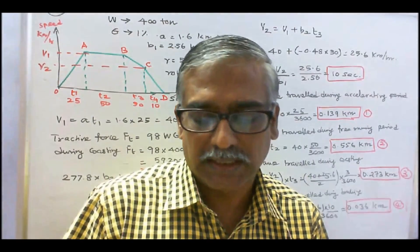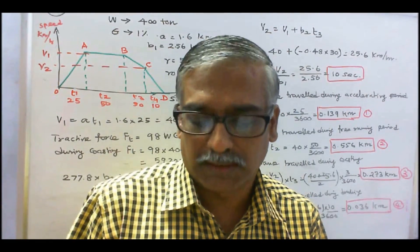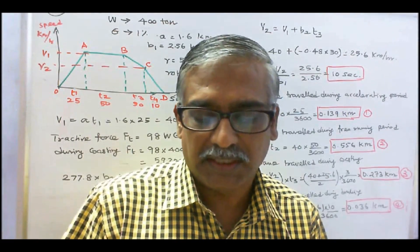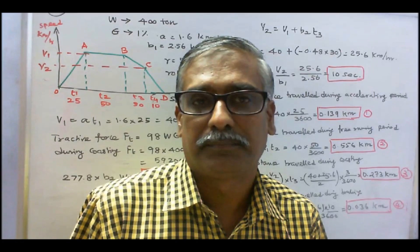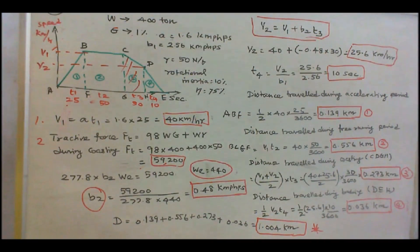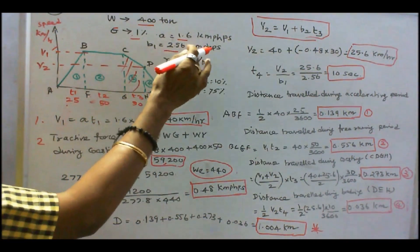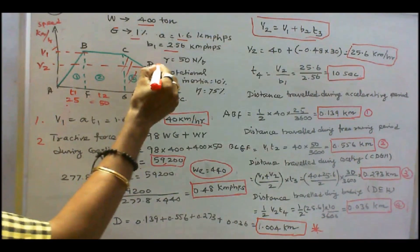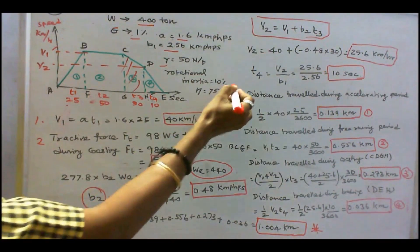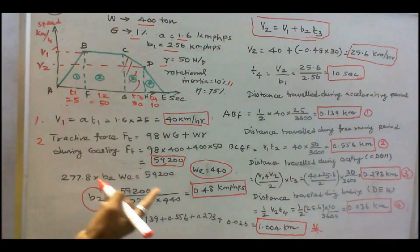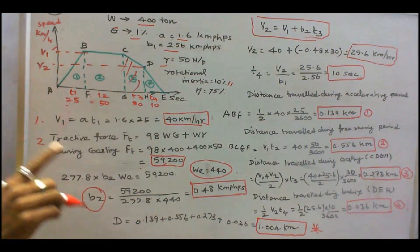Calculate specific energy consumption if train resistance is 50 N per ton, effect of rotational inertia is 10%, and overall efficiency of transmission gear and motor is 75%. Net weight of the train is 400 tons, gradient is 1%, acceleration is 1.6 km per hour per second, braking retardation is 2.56 km per hour per second. Accelerating weight = 400 + 10% of 400 = 440 tons.